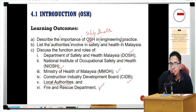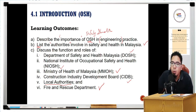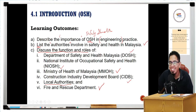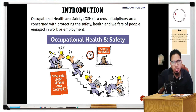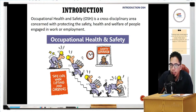So list the authorities: DOSH, NIOSH, CIDB, and others like the Fire and Rescue Department and Police. Then discuss their functions and roles - effectively covering two learning outcomes in one. You can also ask questions at any time during the lecture. OSH is cross-discipline, meaning it's not limited to one field - it applies across all disciplines, though the specific hazards differ.